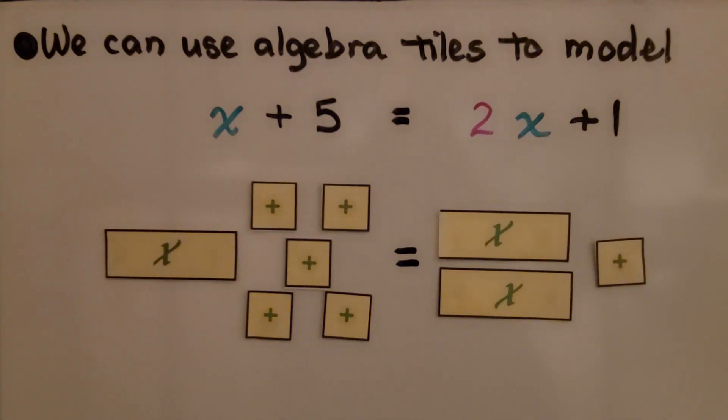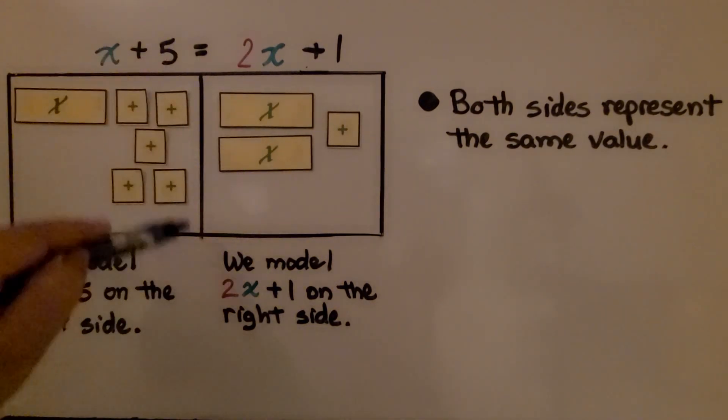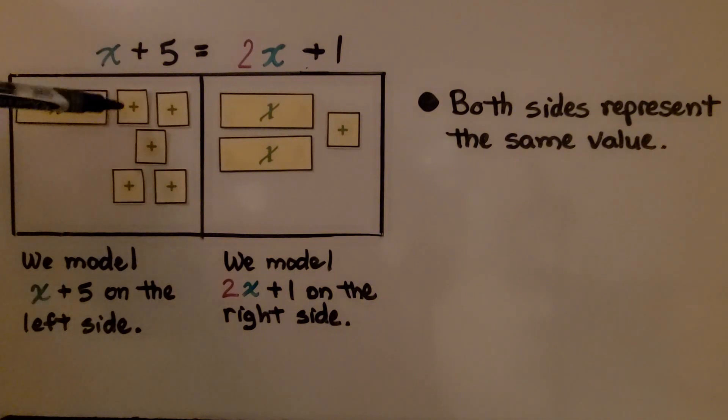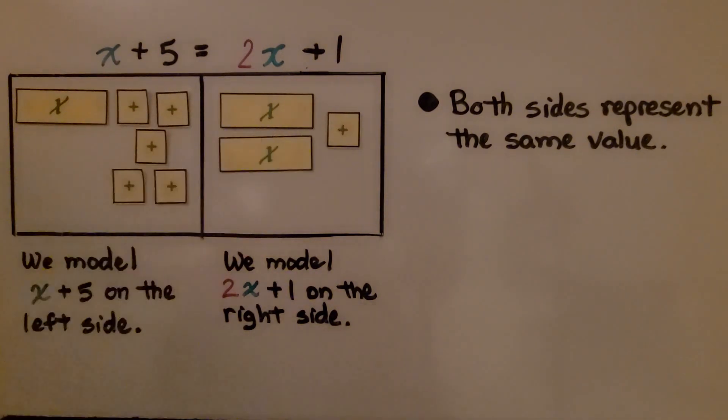We can use these algebra tiles to find the value of x. We have x plus 5 equals 2x plus 1. We use a rectangle that's divided in the middle for our equal sign. We have our x and our 5, we have our 2x and our 1. Both sides represent the same value. They're equal to each other. We model each side of the equation in our rectangle.